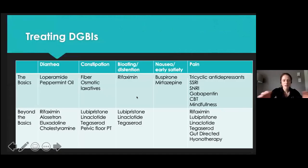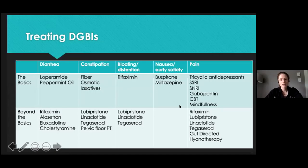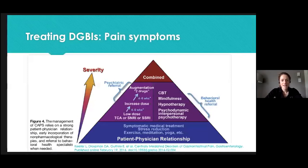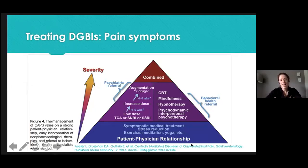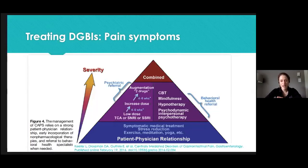This table will be a reference for you moving forward — basics to try after failing lifestyle and dietary changes, and then beyond-the-basics options, including mirtazapine for nausea and early satiety. The treatment pyramid graphic — the base is the patient-physician relationship and stress reduction and lifestyle management; from there, getting people into psychotherapies while also potentially starting a neuromodulator — that's one approach for patients primarily presenting with pain and sensory symptoms.